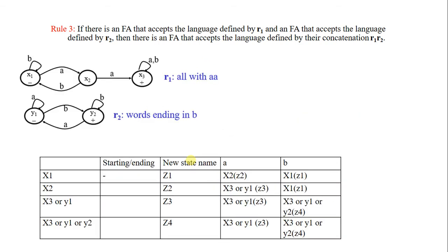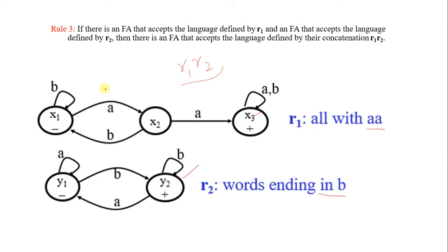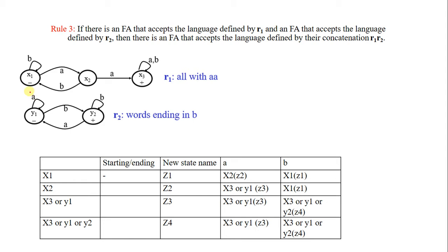Now we draw the transition table. Let's say state x1 is z1, x2 is z2, and x3 combined with y1 forms z3. Starting from z1: at z1 for letter a you move to x2 which we call z2, and for letter b you stay at z1. Now at z2, if you read letter a you move to x3 or y1, which we call z3.